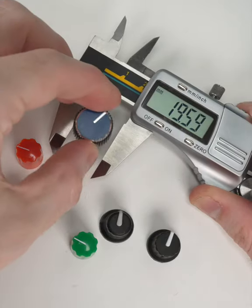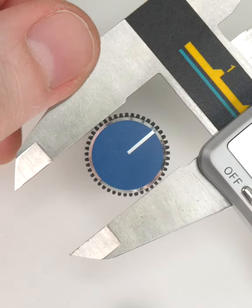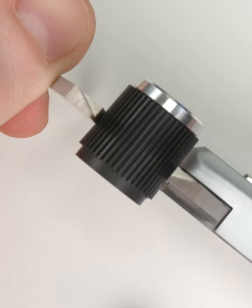By gently closing the larger set of jaws, one can measure an object's outer diameter. Just make sure the flat sides are flush against the object's surface.